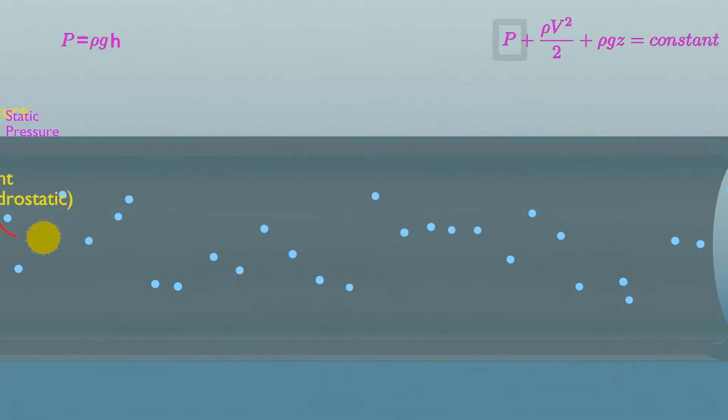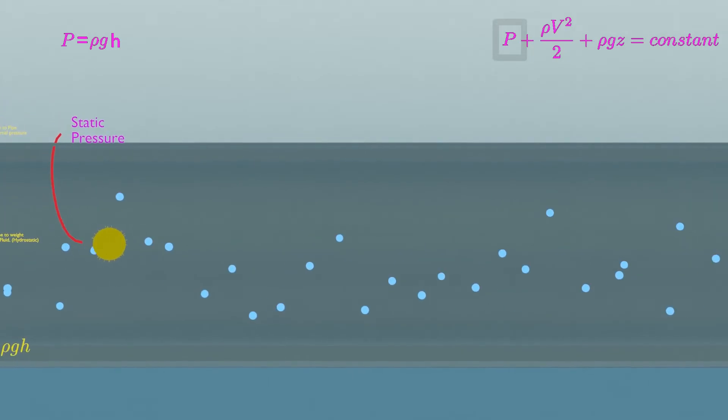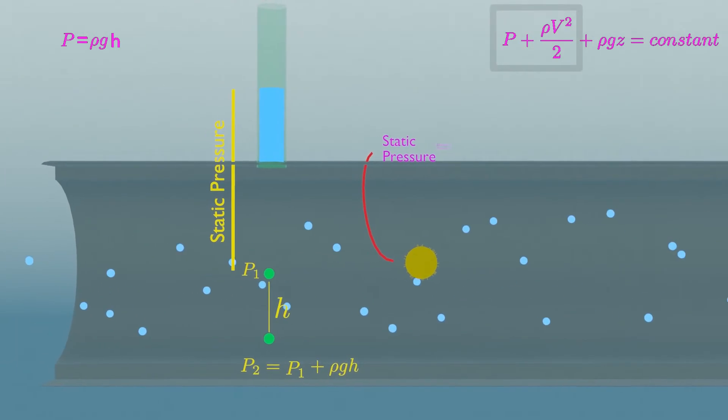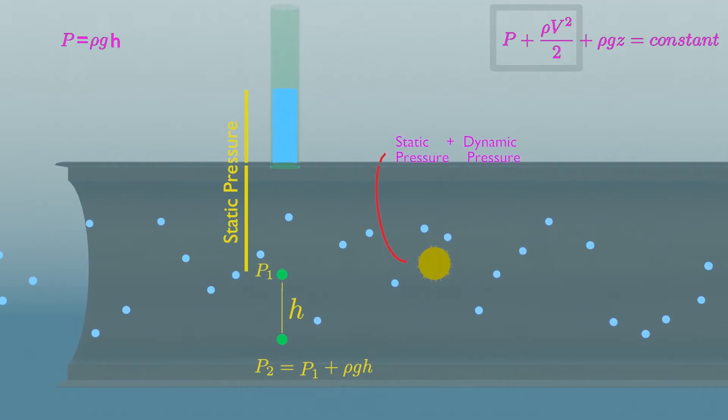But if the ball is fixed at one point, then the ball shall experience both static and dynamic pressure of this fluid. Here the ball is completely trying to stop fluid near its location. And in order to stop local fluid or reduce its velocity to zero, it needs to do some work against it, and hence the ball experiences total pressure.